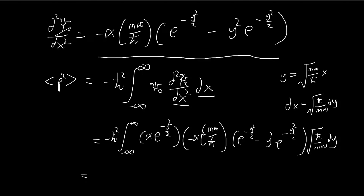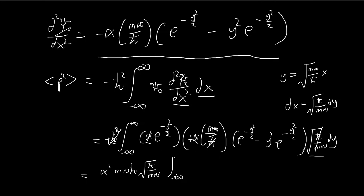Let's simplify by taking out the constants. The negative sign cancels out, and h-bar cancels out as well. We have two alpha terms giving alpha-squared, and we have m omega times h-bar. Inside the integral, we're left with e to the power of negative y-squared — because both exponential terms multiply together — minus y-squared times e to the power of negative y-squared, all times dy.